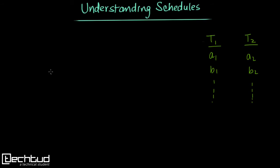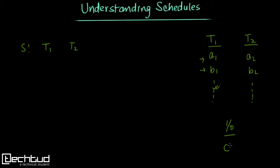One way of executing is to run all operations from T1 first, then T2 — so T1 followed by T2. But not all operations are CPU-intensive; some require only input/output, and during I/O the CPU remains idle. So the idea is: the moment the CPU becomes idle, we can schedule another operation from a different transaction to improve performance.